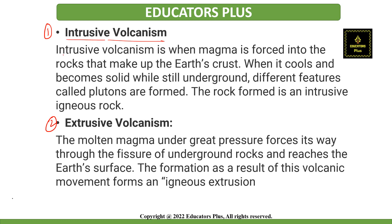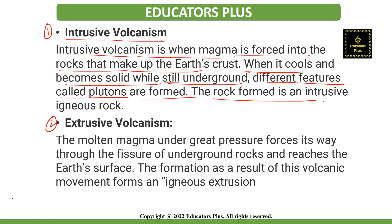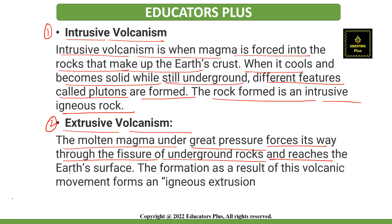In intrusive volcanism, magma is forged into the rocks that make up the Earth's crust. When it cools and becomes solid while still underground, different features called plutons are formed, and the rock formed is an intrusive igneous rock. In extrusive volcanism, molten magma under great pressure forces its way through the fissures of underground rocks and reaches the Earth's surface, forming an igneous extrusion.